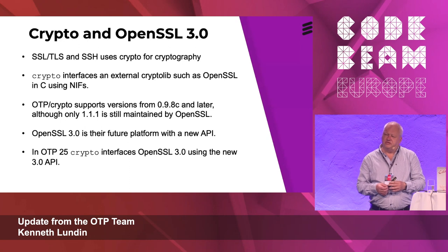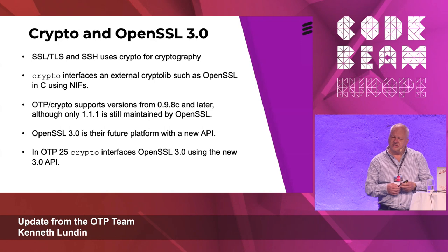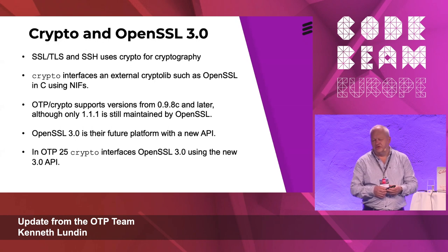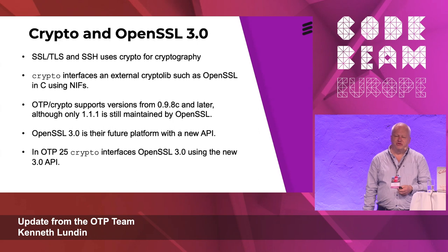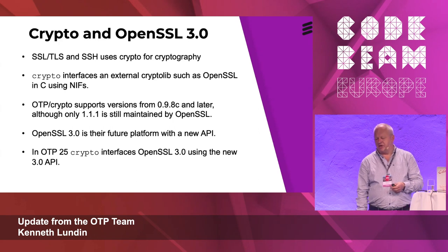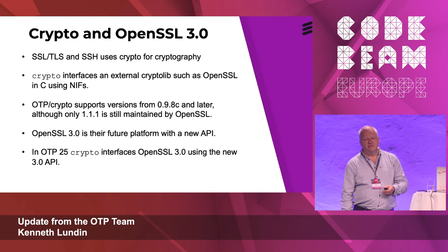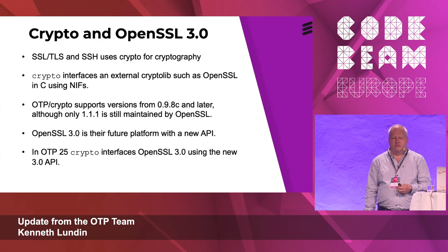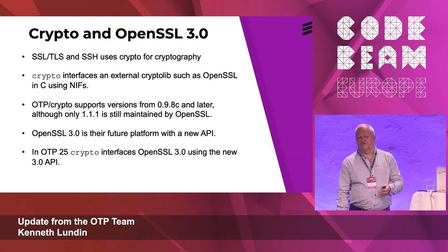Crypto is heavily used in OTP and it relies on OpenSSL. OpenSSL has released version 3.0, which is their new platform with a new API, so it has taken quite some work to support it. But now in OTP 25 we support OpenSSL 3.0, making us quite future-proof for following OpenSSL development.